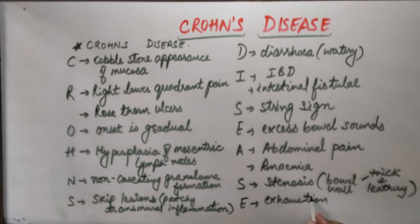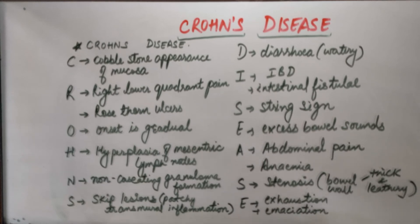E stands for exhaustion and also emaciation, which is due to malabsorption of iron, vitamin B12, and folic acid. Thus, this is the simplest way to remember the symptoms and investigatory observations of Crohn's disease.